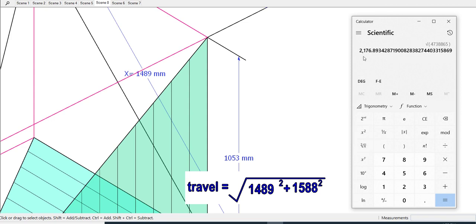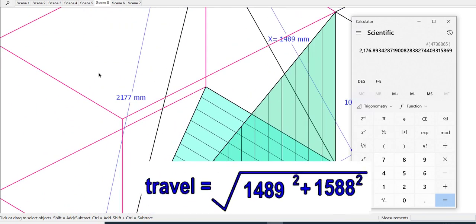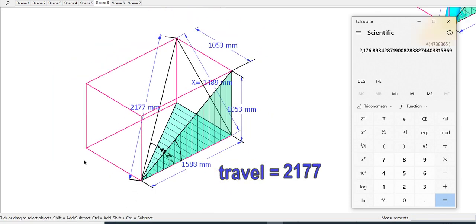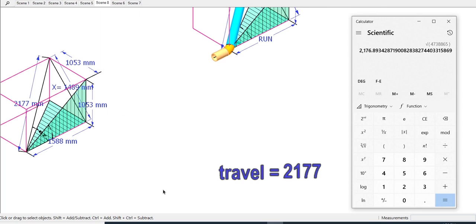Let us cross check if these values are correct. So the value of travel is 2177 millimeters.